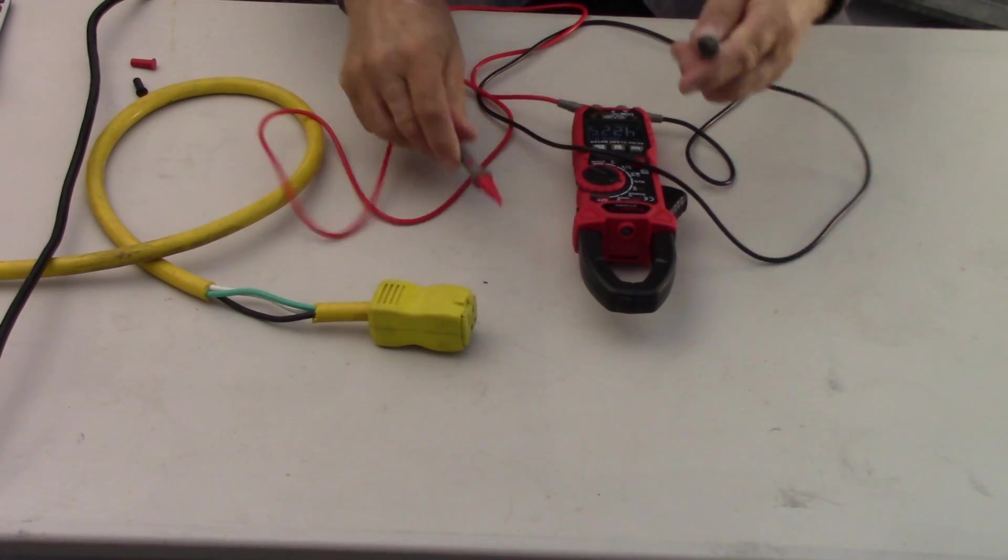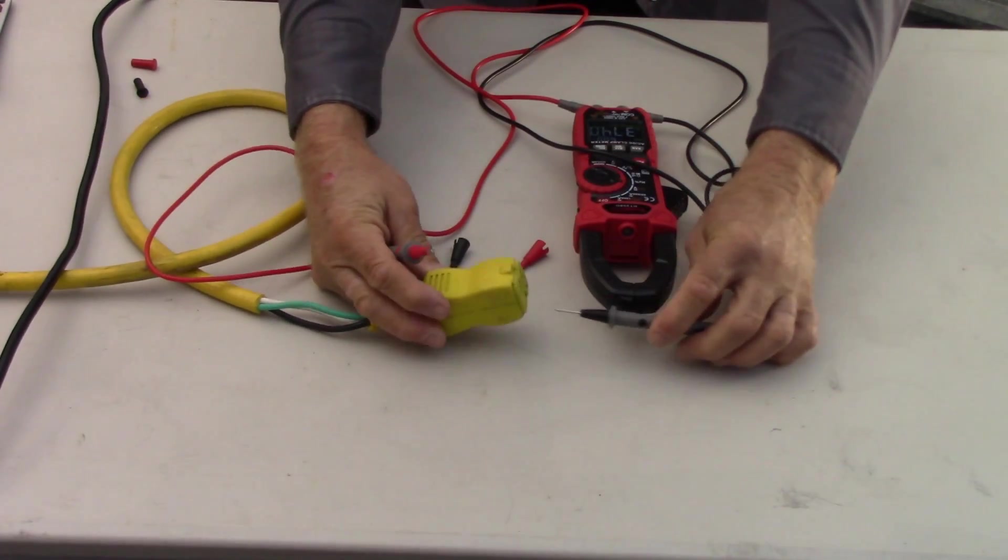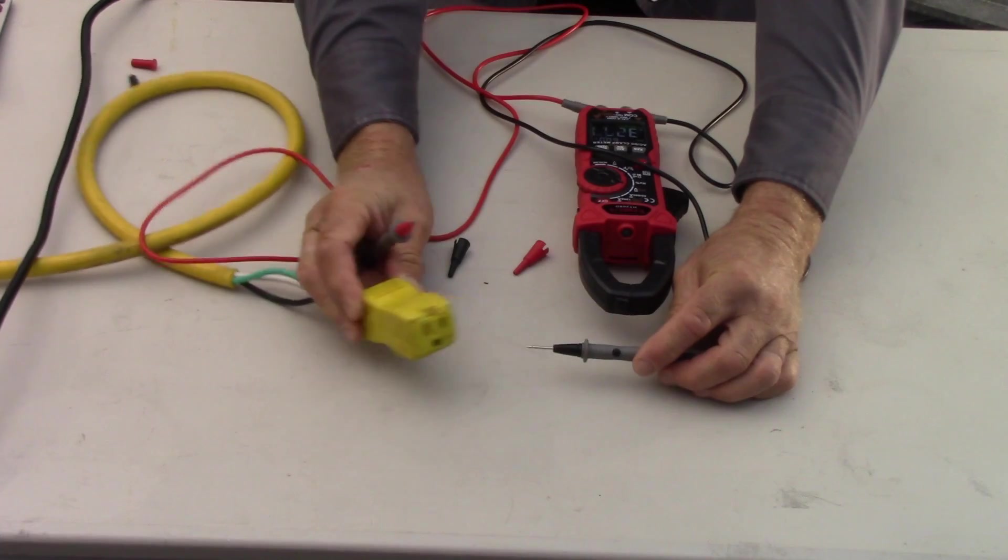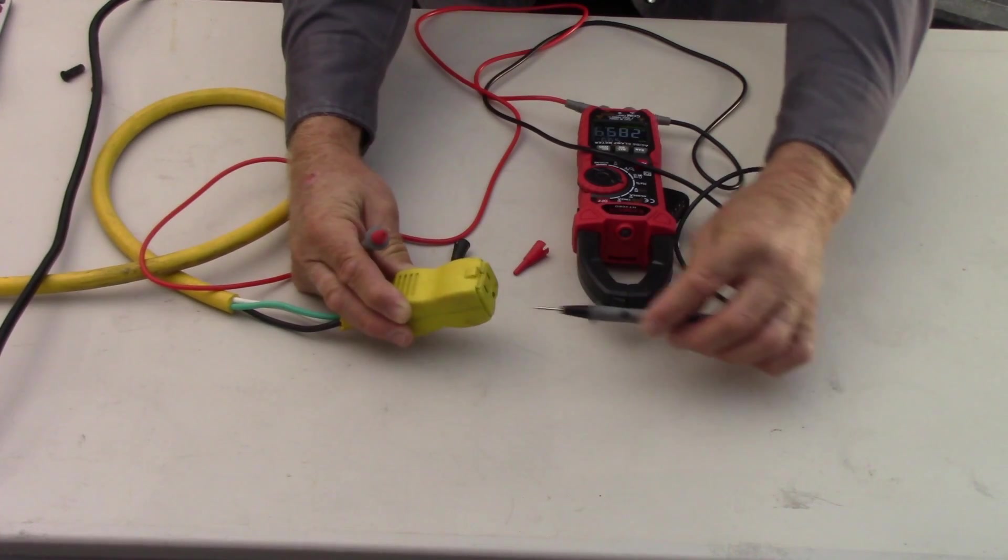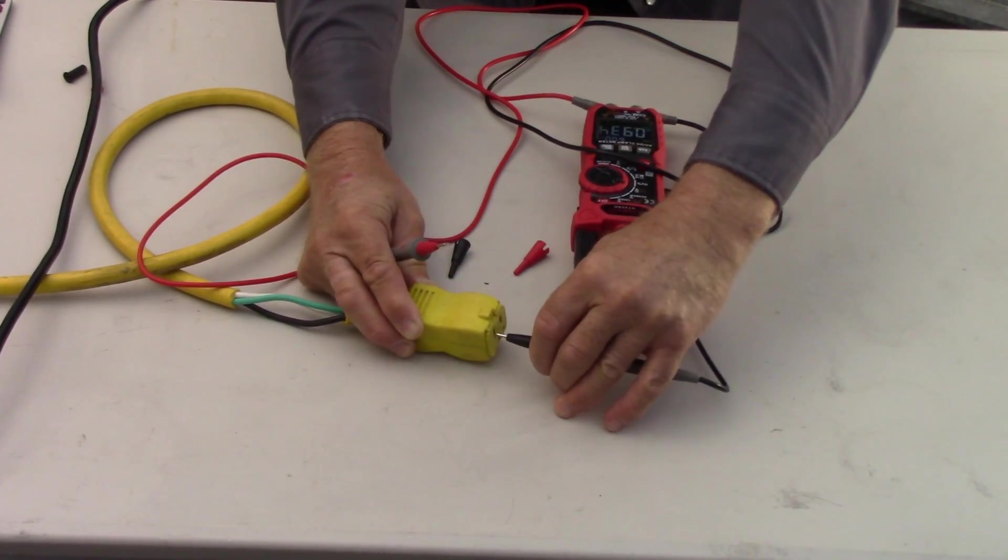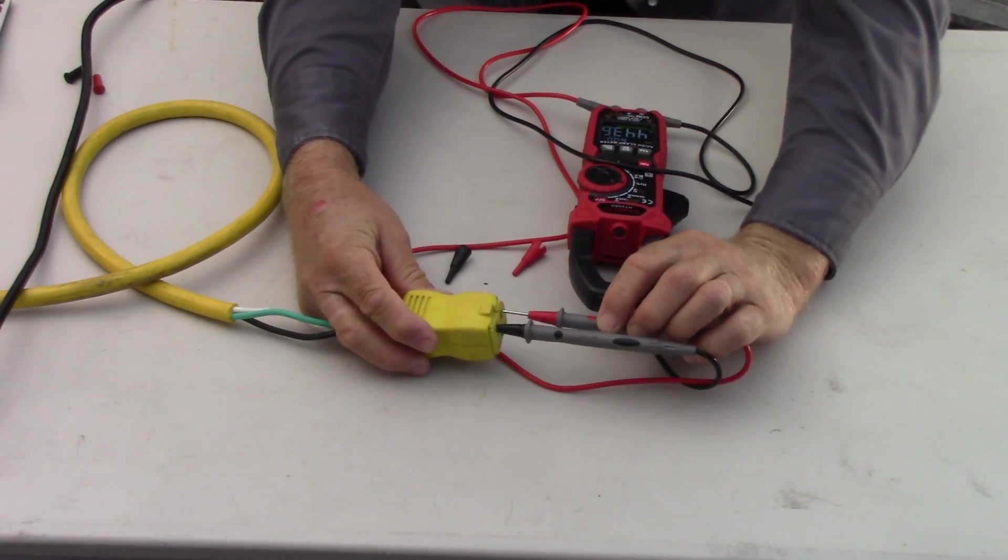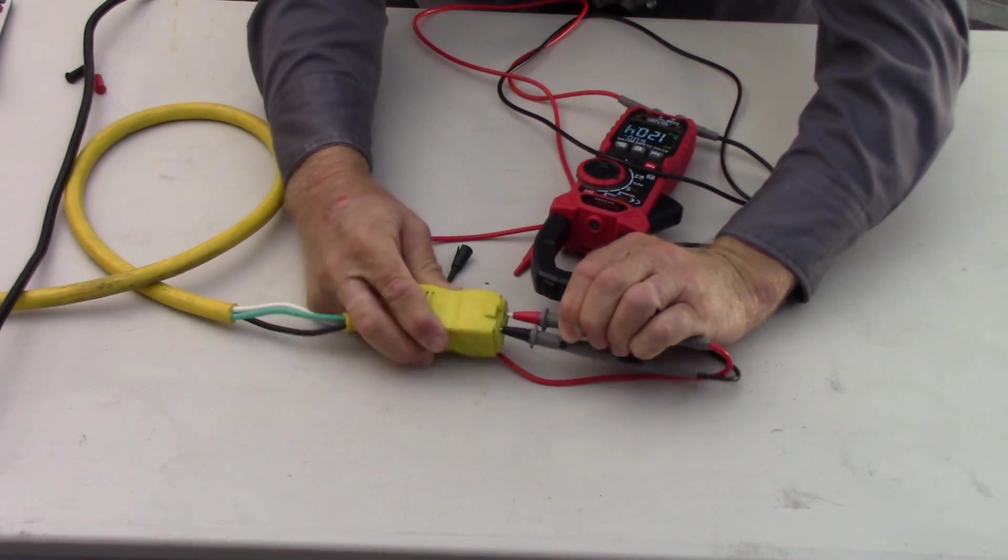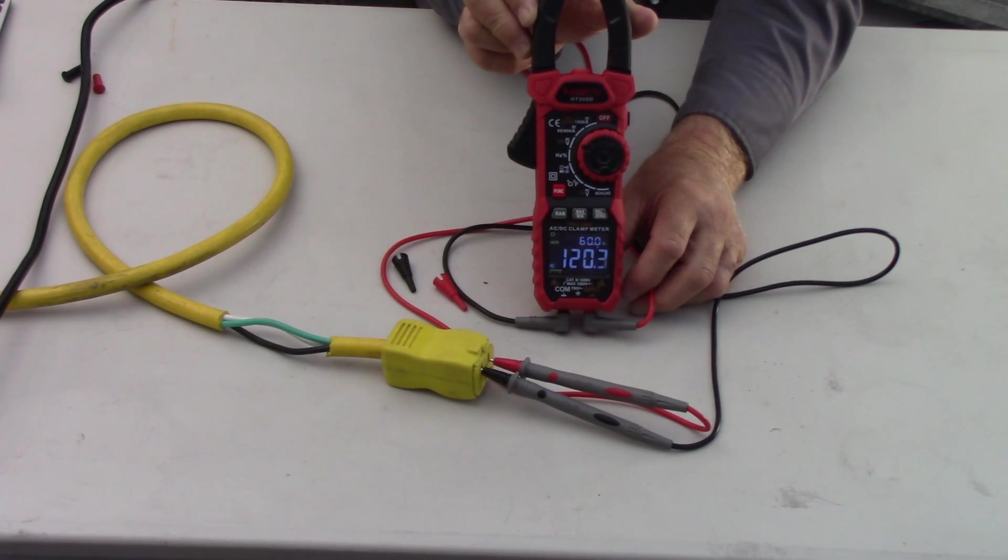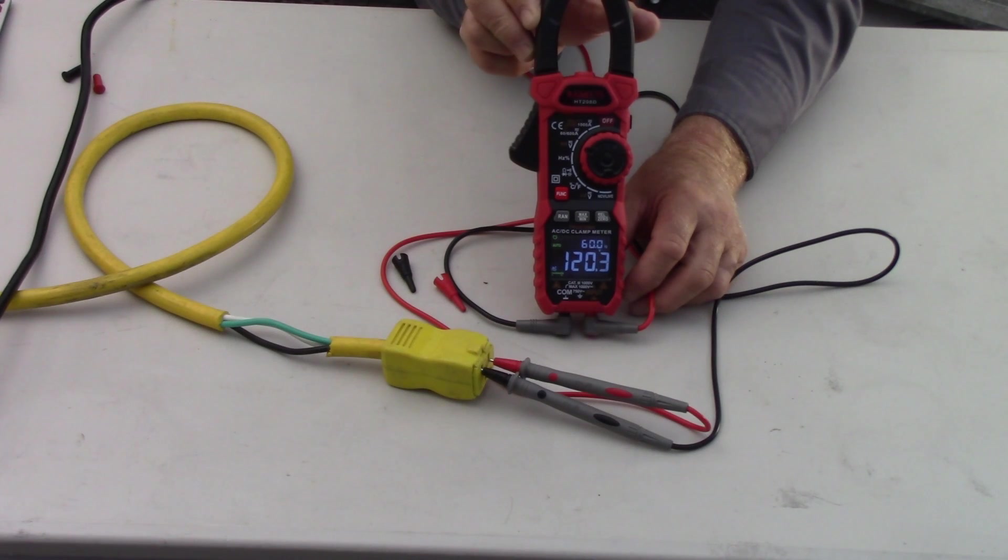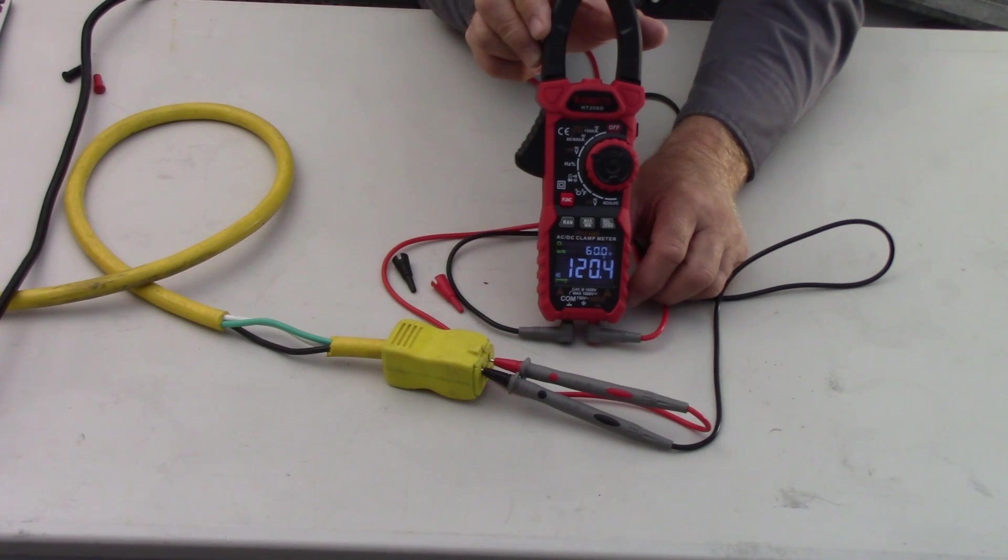Take our leads, take off the little guards here because we've got to get right into this connector body. Use the common for the neutral - neutral is the wider slot - and the hot is the narrower slot. Stick our common into the neutral, nice tight connector body from Hubble, and our other lead into the hot slot. As you can see, 60 cycles, 120.3 volts. Now we know we've got 120 volts pressure. We'll use that as the multiplier because volts times amps equals the watts.